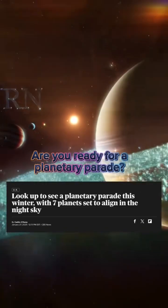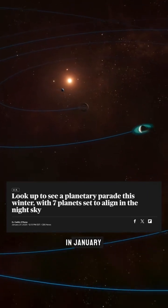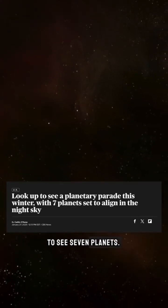Are you ready for a planetary parade? Four planets will be visible at one time in January and the parade will only grow in February when you'll be able to see seven planets.